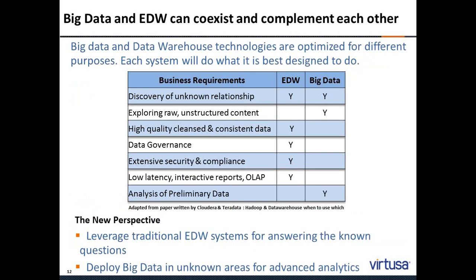Moving on to the next slide, I want to delve further on how big data and the enterprise data warehouse can co-exist and complement each other. Here I am listing a table showing that the enterprise data warehouse still makes sense for certain aspects — for example, if we are worried about high quality consistent data, data governance, or extensive security and compliance. In those cases, we are not looking at big data; we are looking at what can come out of the data warehouse.